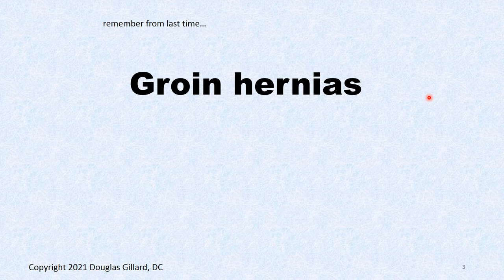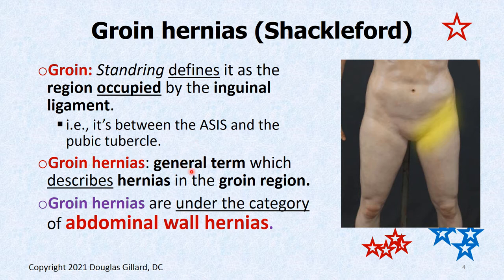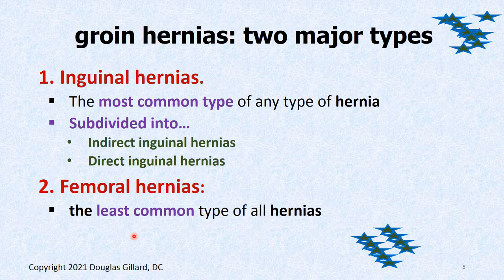Let's talk about groin hernias. The groin region is where the thigh meets the lower part of the pelvis, officially defined as the region occupied by the inguinal ligament, between the ASIS (anterior superior iliac spine) and the pubic tubercle. Groin hernia is a general term encompassing two types: inguinal hernias and femoral hernias. Inguinal hernias are further subdivided into indirect inguinal hernias and direct inguinal hernias.